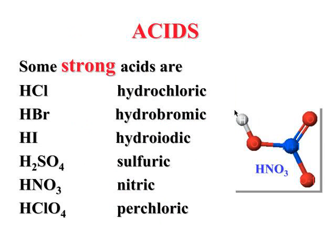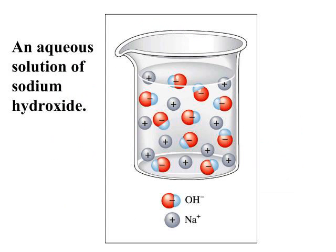You need to be very familiar with your strong acids and you will need to memorize them. HCl, HBr, HI, sulfuric, nitric, and perchloric are all strong acids and should be written in ion form, as if they dissociated 100%, which is what they do.